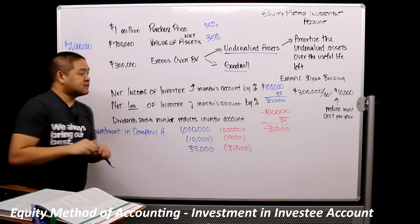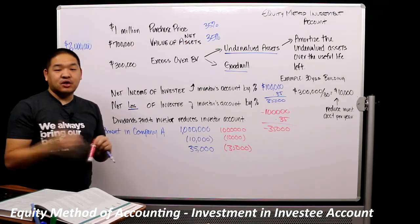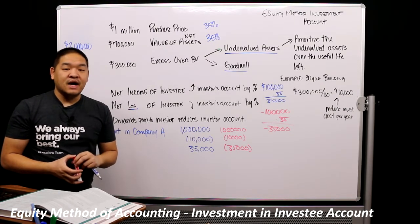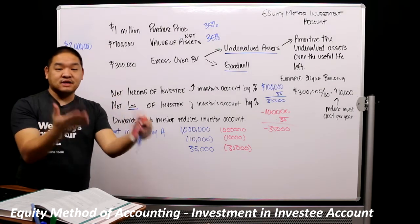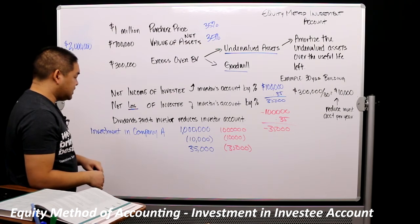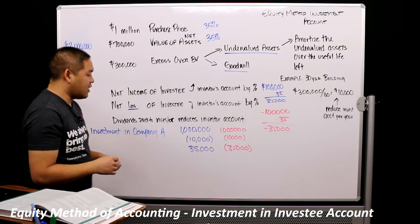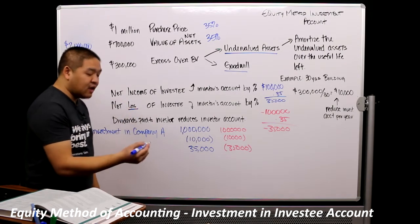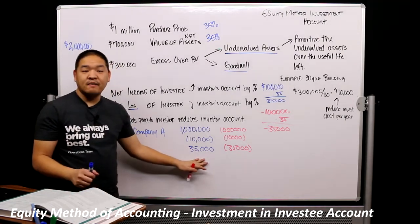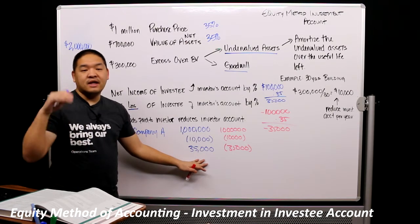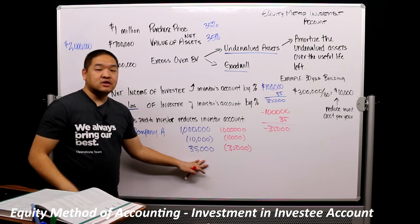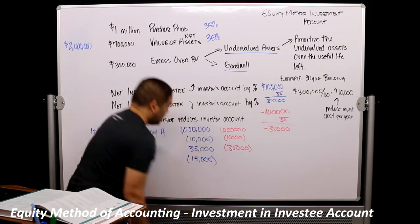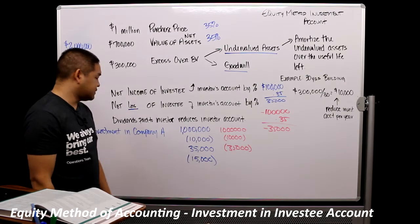The last part is dividends. Dividends are not income under the equity method — they are a reduction in our investment in the investee. So if dividends are paid to the investor, we reduce the investor's account by the amount of dividends received. Let's say we receive $15,000 in dividends. They had $35,000 income, they give us $15,000 and keep $20,000 to invest back in the business. So we reduce our investment in company A by $15,000.